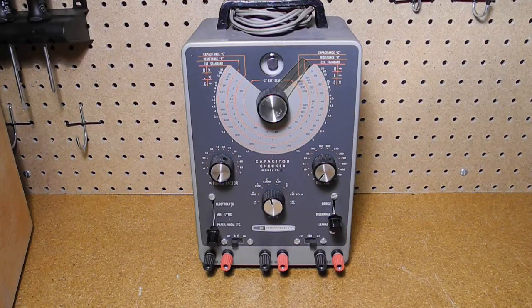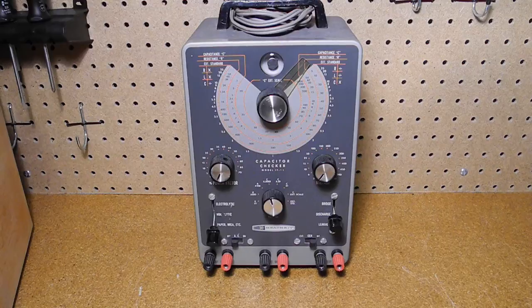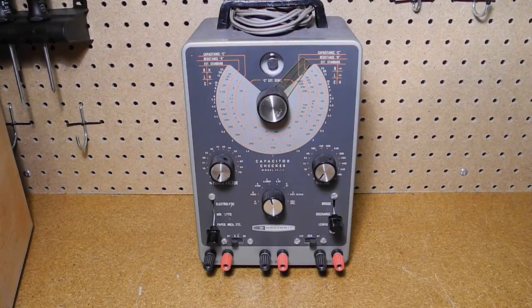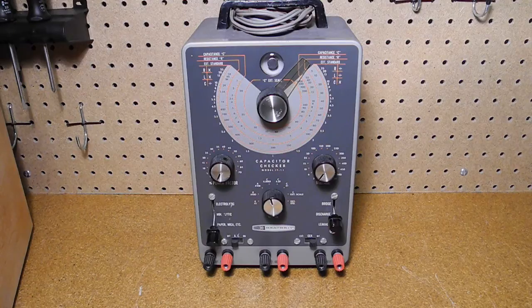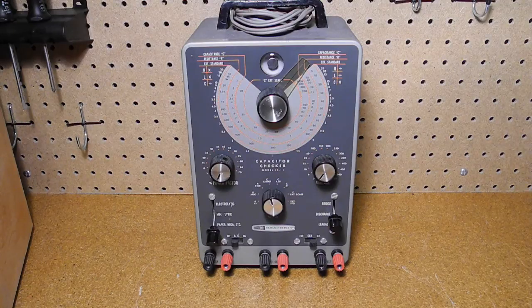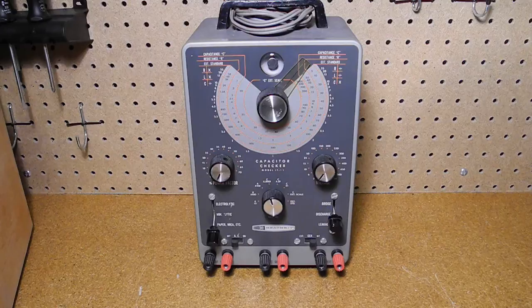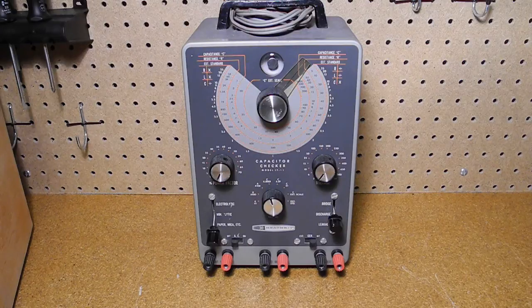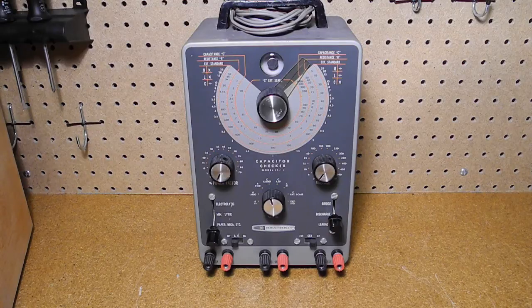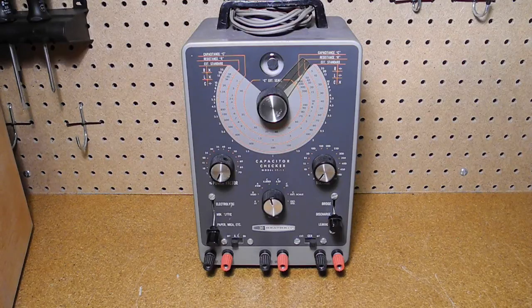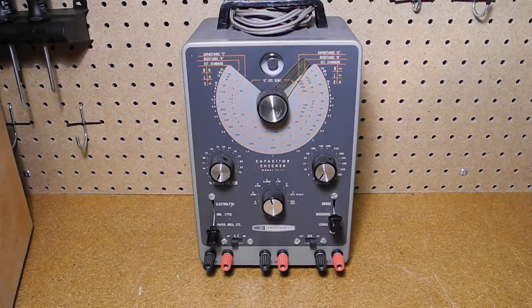Heath Kit also sold capacitor testers, which could measure resistance, capacitance, and inductance. These units tended to be lower in cost than impedance bridges, and were used mainly for testing capacitors for value as well as leakage. They often used an eye tube as an indicator rather than a meter, and were not as accurate as a bridge. I have a separate YouTube video on the Heath Kit IT-11 capacitor checker shown here.